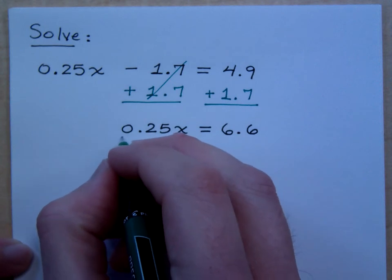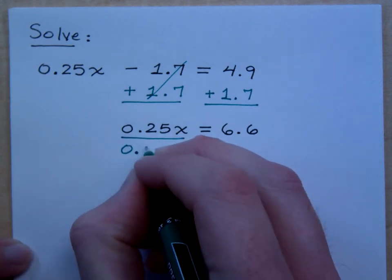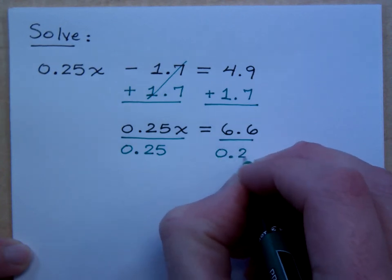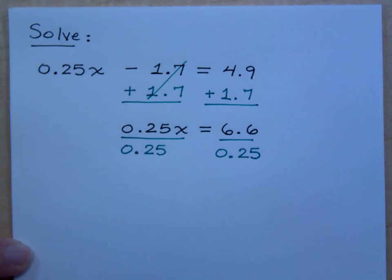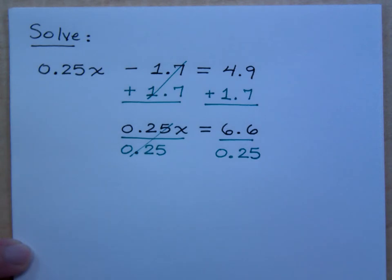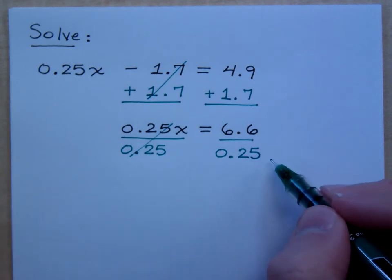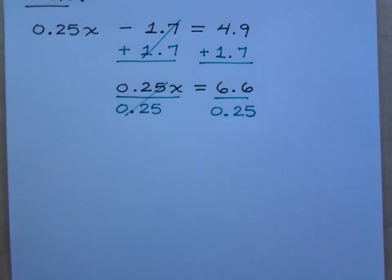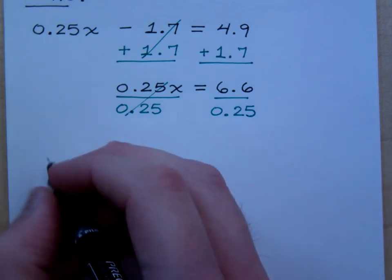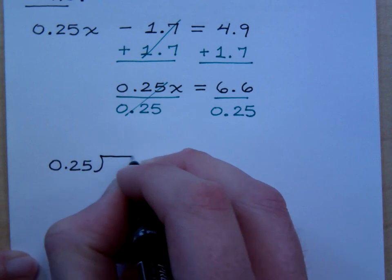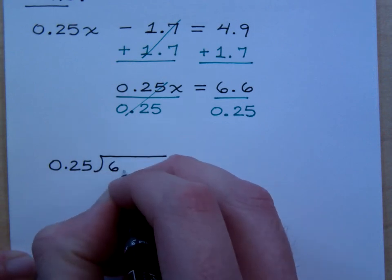Now we do division, so we divide by 0.25. So when I divide by the coefficient, these guys reduce to give me 1. And then I have this work that I need to do off on the side. So that's what you guys need to take care of. 6.6 divided by 0.25. So let's set this up correctly. We have 0.25 is the divisor dividing into 6.6.